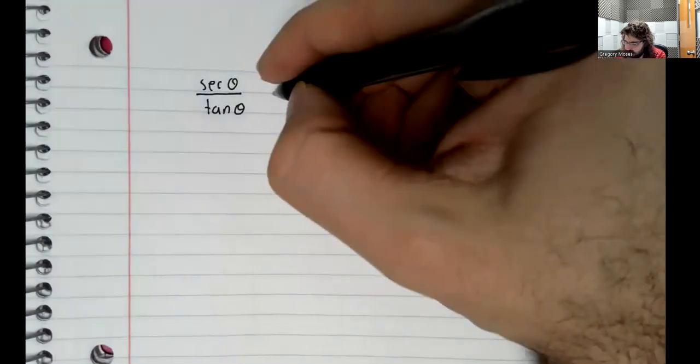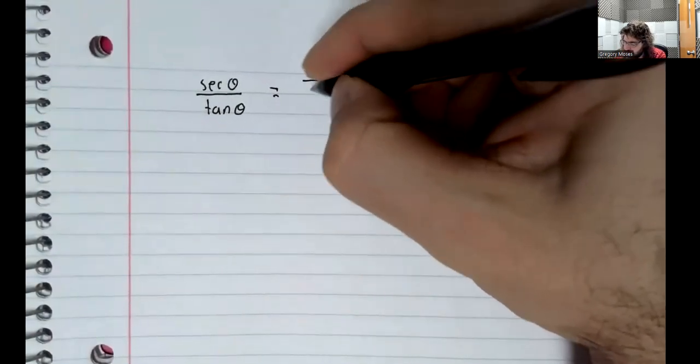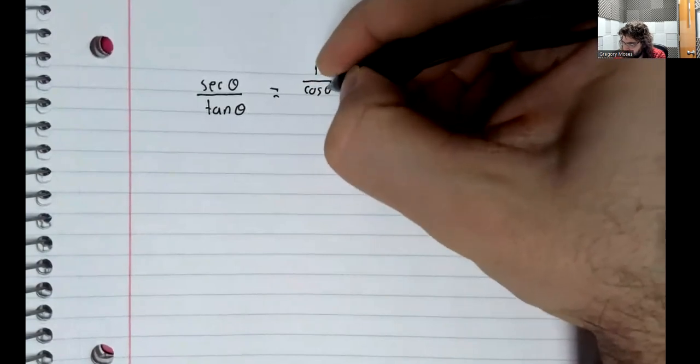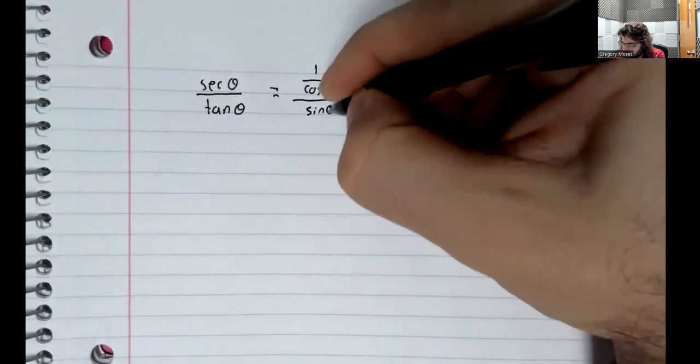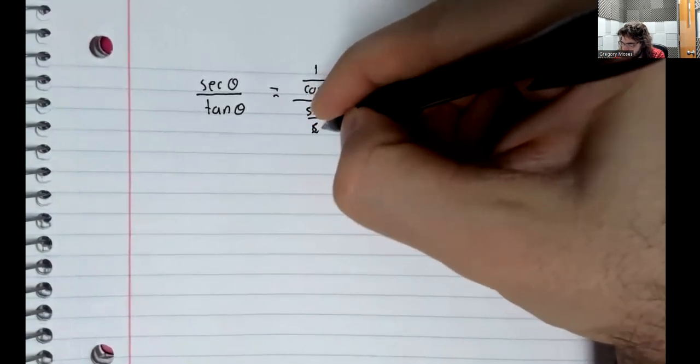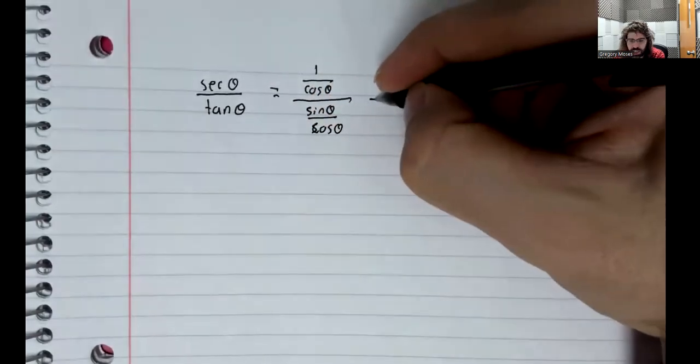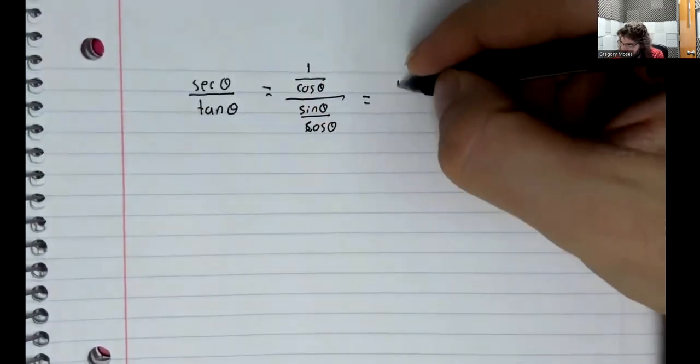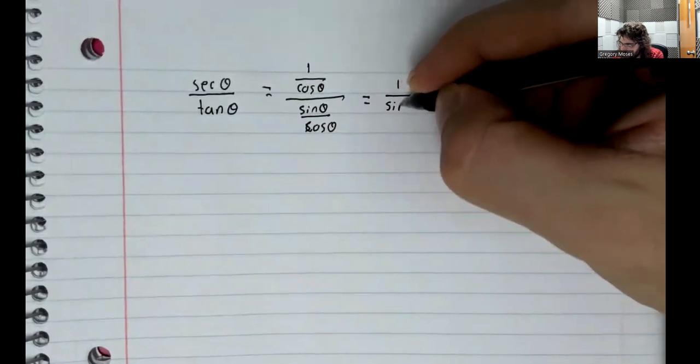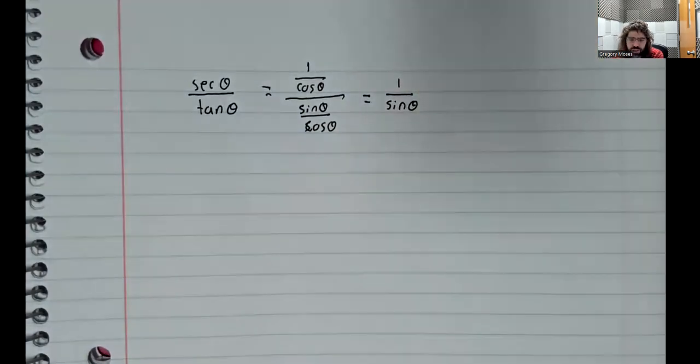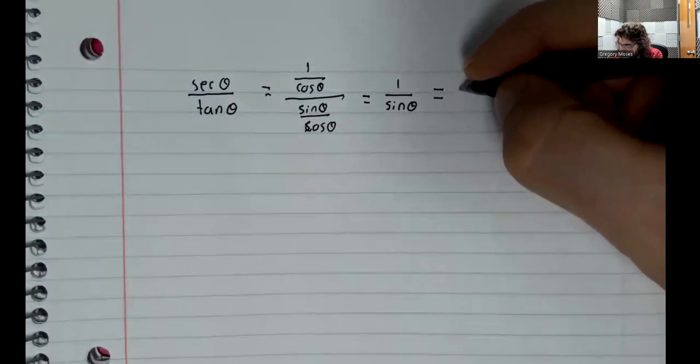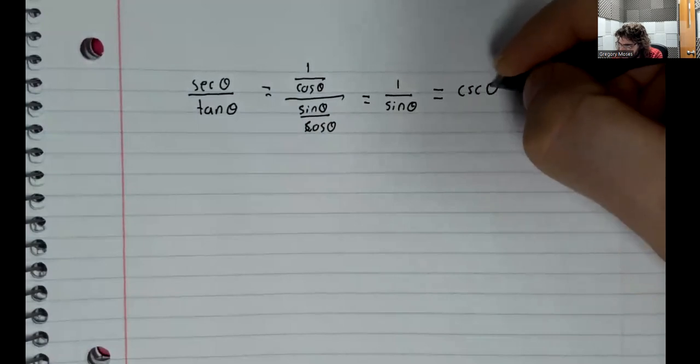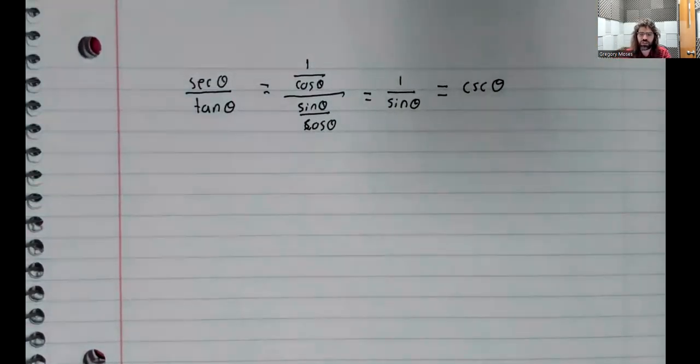The secant is 1 divided by the cosine, the tangent is the sine divided by the cosine. Those cosines cancel, and we're left with 1 divided by the sine, which is the cosecant.